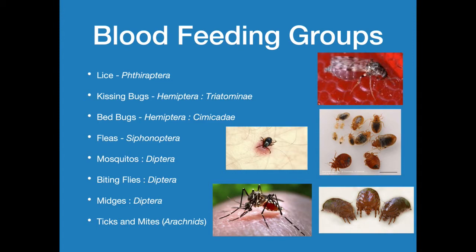What are the groups of blood-feeding insects? We have lice, kissing bugs — which are important because they spread Chagas disease — bed bugs, which don't spread disease but do cause secondary infections and have a major economic impact, fleas (both animal and human, so a zoonosis), mosquitoes of course, biting flies. The Diptera order is quite large. Then there are midges, and finally ticks and mites, which fall under arthropods as arachnids, not insects.